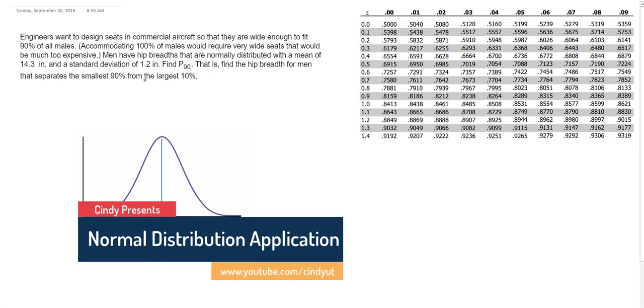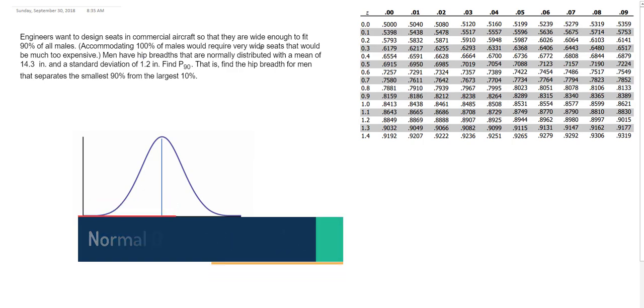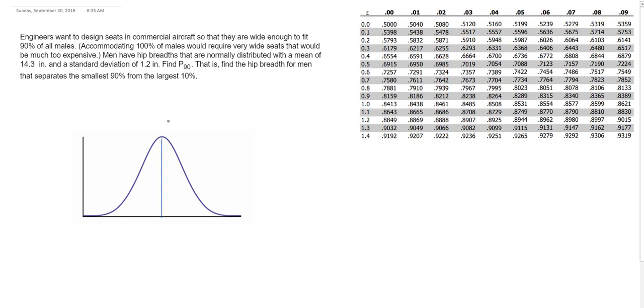We have this question that says engineers want to design seats in commercial aircraft so that they're wide enough to fit 90% of males. In other words, we want to be sure we can get up to 90%. Men have hip breadths that are normally distributed with a mean of 14.3 inches, and a standard deviation of 1.2 inches.